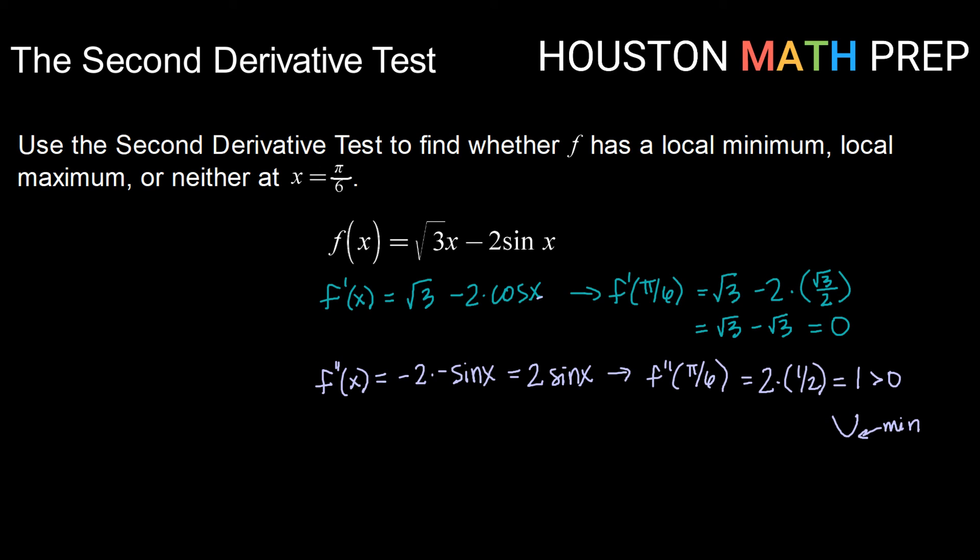So we can conclude that since f prime at pi over 6 equals 0, and f double prime at pi over 6 equals 1, which is greater than 0, f has a local minimum at x equals pi over 6.